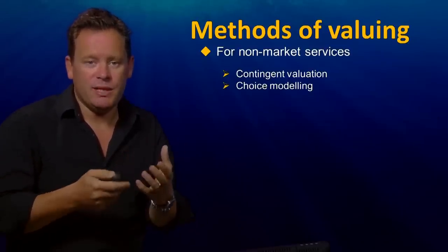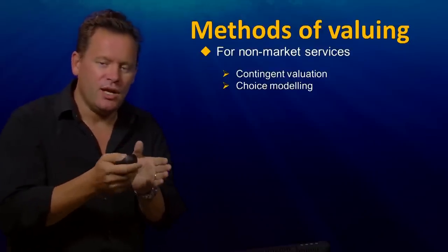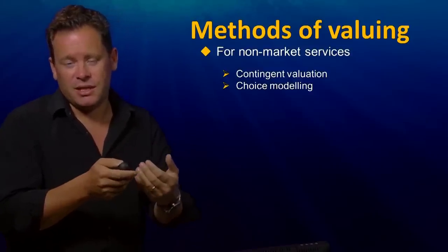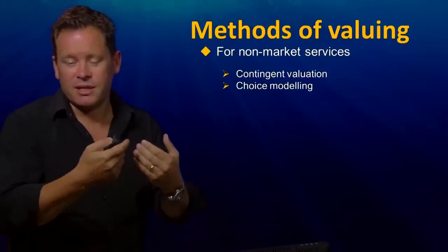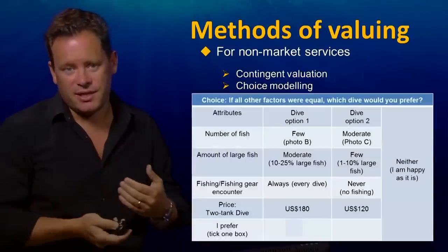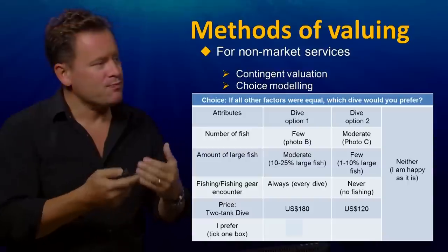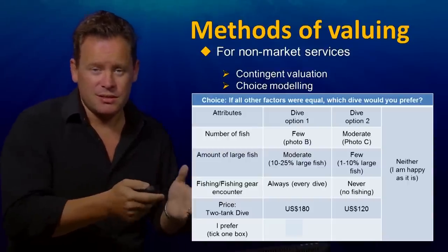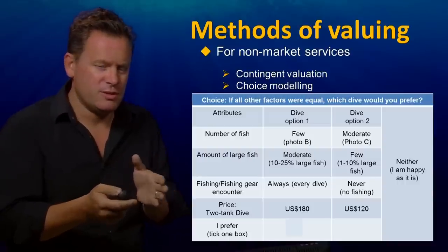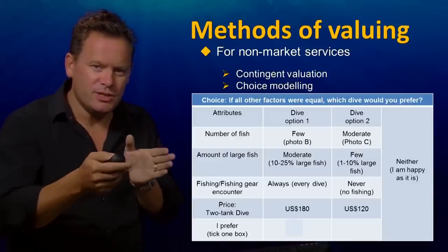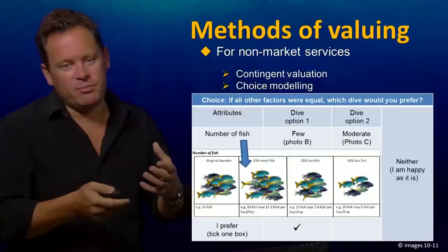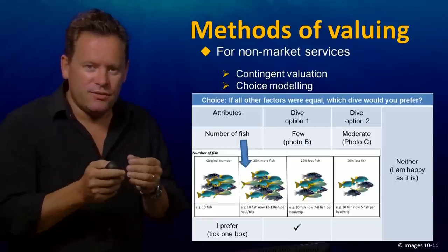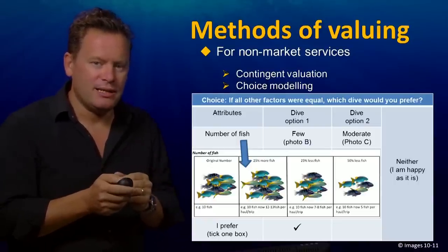Another way is to provide people with a set of scenarios and give them a choice, then figure out from their decisions what they are really valuing. For example, you might talk to divers after a boat trip and give them options: dive site one has relatively few fish but quite a few big ones; dive site two has more fish but not so many big ones. If they choose option one, you can infer they value large fish, revealing what they actually value about that ecosystem.